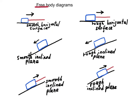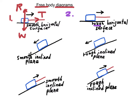Let's look at free body diagrams in the following cases. In case one, the block is pulled by a string on a smooth horizontal surface towards the right. The free body diagram on mass M shows its weight W, normal reaction R, and the tension of the string T. For case two, a block of mass M is pulled by a string on a rough horizontal surface. The forces on the mass are its weight, the normal reaction, the tension of the string, and frictional force.